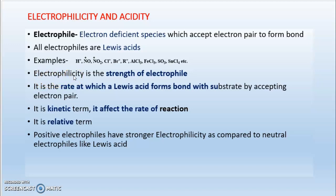If an electrophile is good, its electrophilicity will be higher. The electrophile which has higher electrophilicity can be called a better electrophile. The relative strength of an electrophile can be measured in terms of electrophilicity — the rate at which the electrophile forms a bond with a substrate, which is typically a nucleophile. This is a kinetic term because we are studying the rate at which the electrophile forms a bond with the substrate.